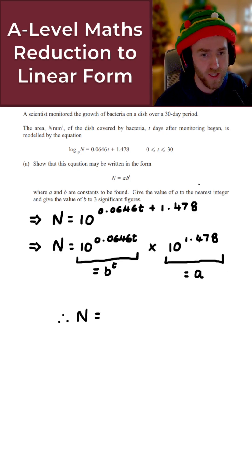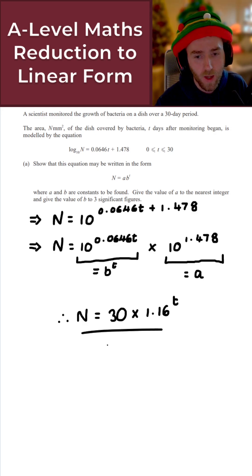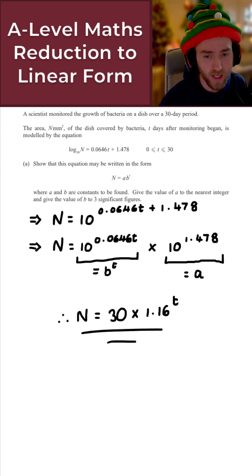And A here is just simply 30. Don't forget that A is the nearest integer and B is to 3 significant figures. So altogether, what I get here is 30 times 1.16 to the T. Perfect. And there we go. That gives us the solution to today's daily question.